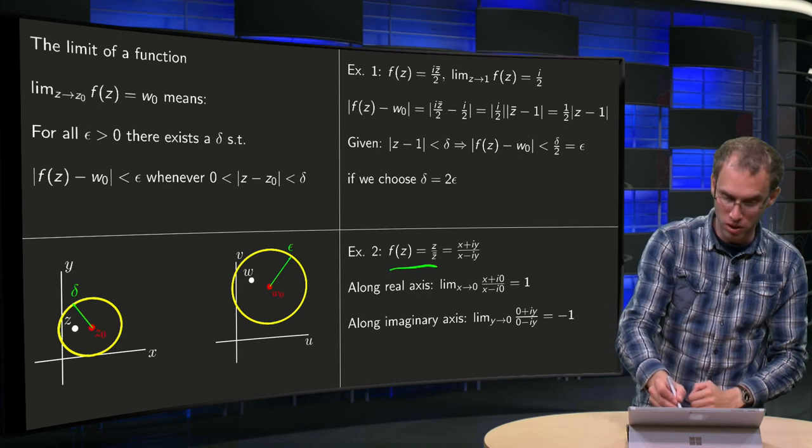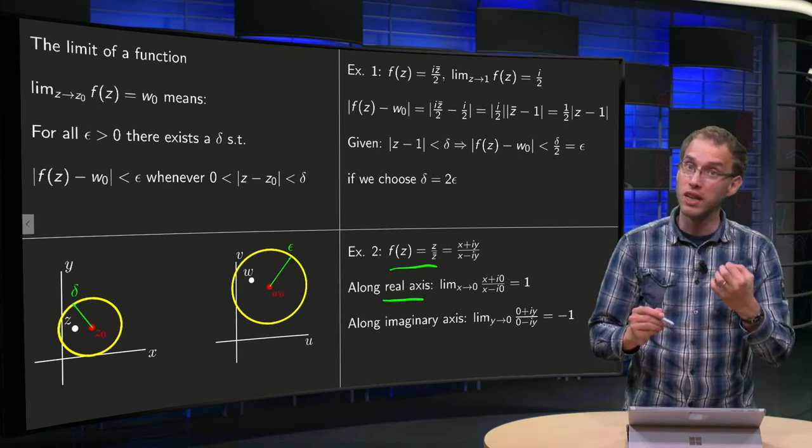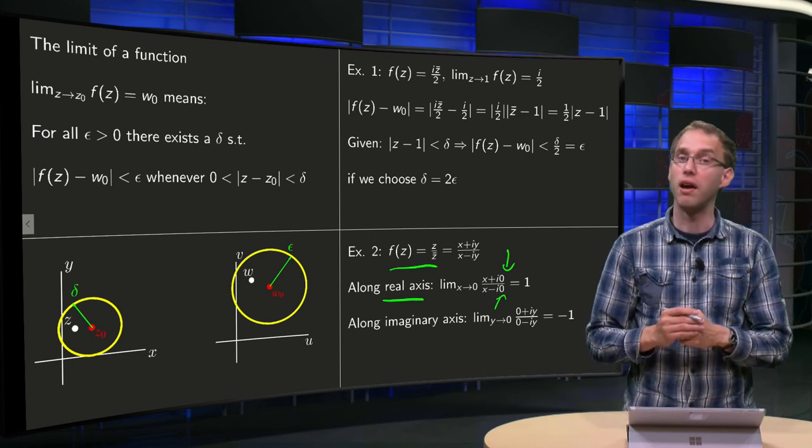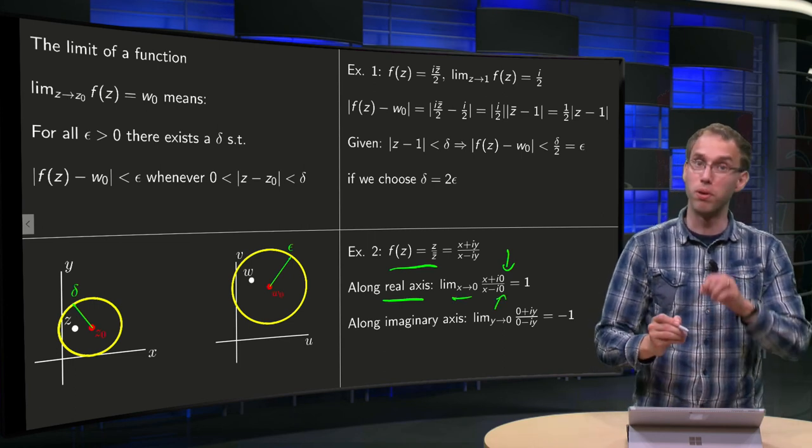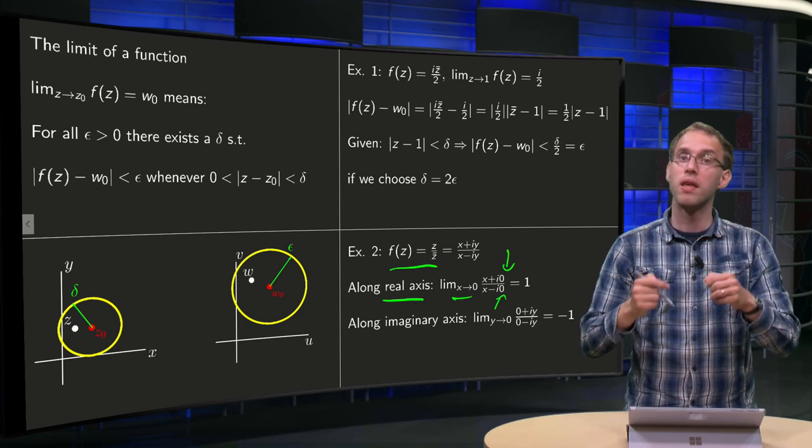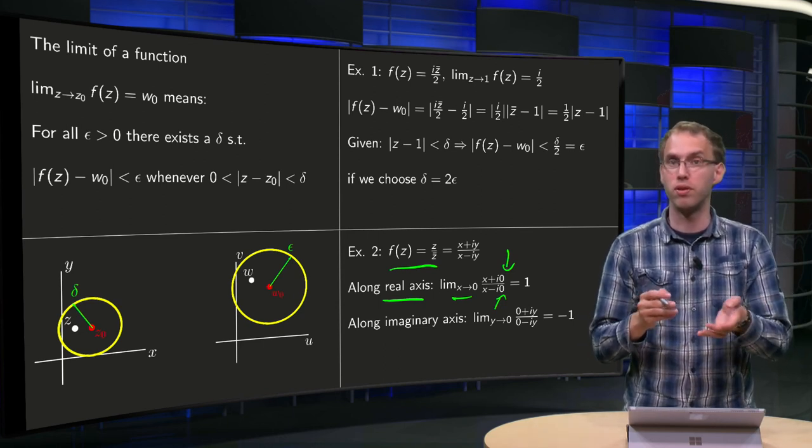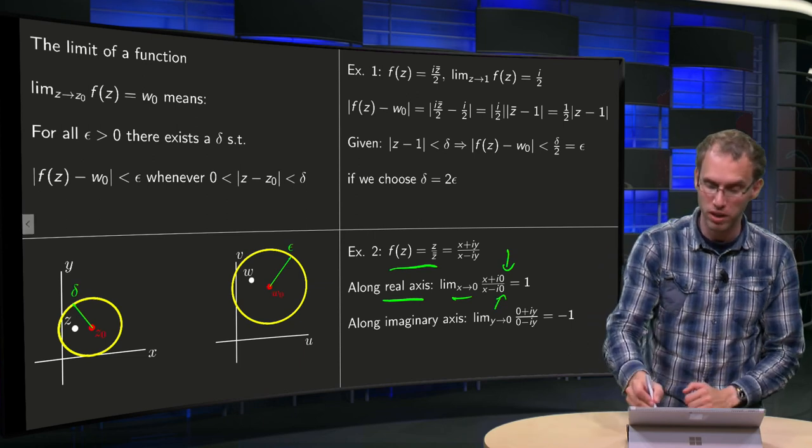So what happens in this case if we approach along the real axis? Along the real axis we have y = 0, and then we set x to 0 in order to approach 0. But we already have x/x = 1, and then taking the limit as x → 0 doesn't do anything anymore. We just get 1.